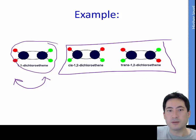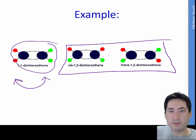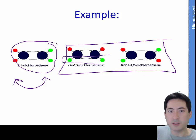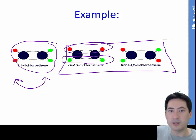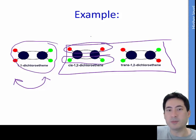This is important for the properties of the molecule because the cis isomer will have a net dipole moment, and you would expect that the melting point and boiling point would be higher.